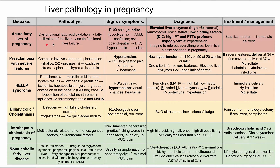The symptoms here are jaundice, which will definitely be noticeable. They'll have right upper quadrant pain, hypoglycemia, which can result in altered mental status and confusion. Patients might also have nausea and vomiting. They can have a coagulopathy, which can result in DIC and bleeding. Hypoalbuminemia can lead to ascites as well.